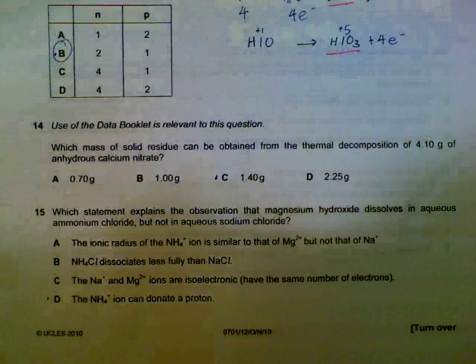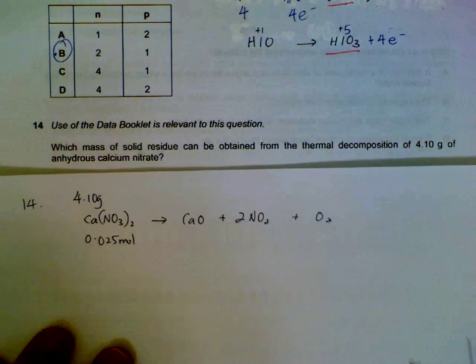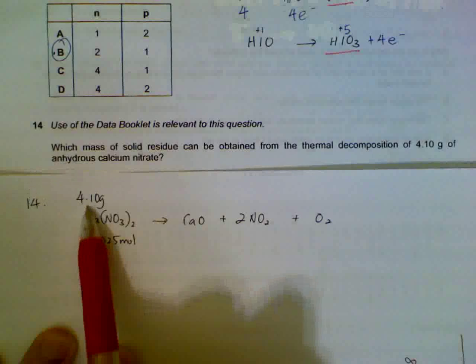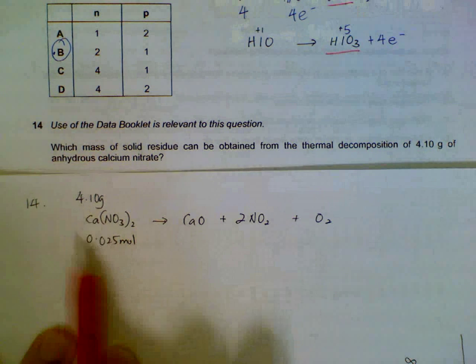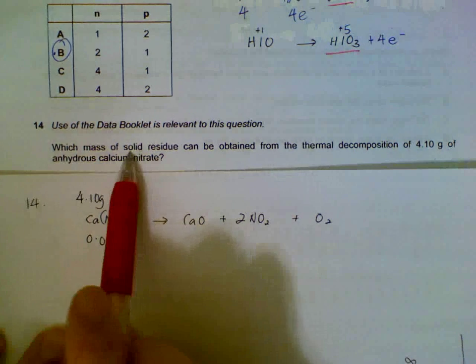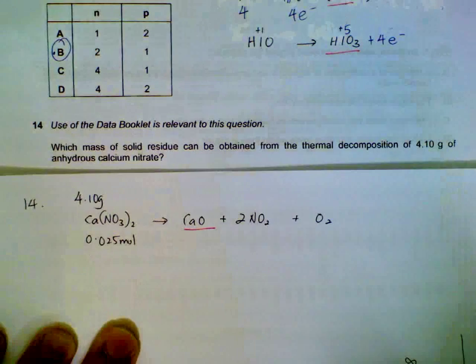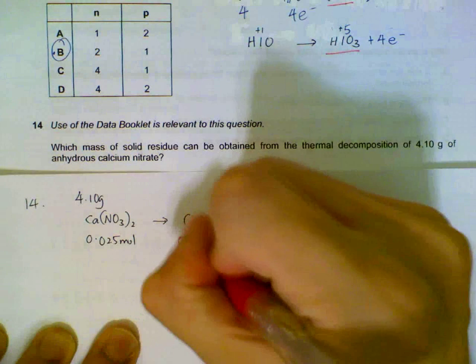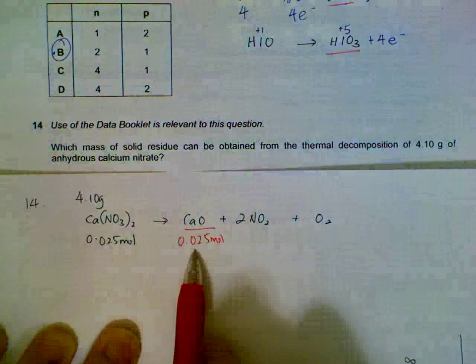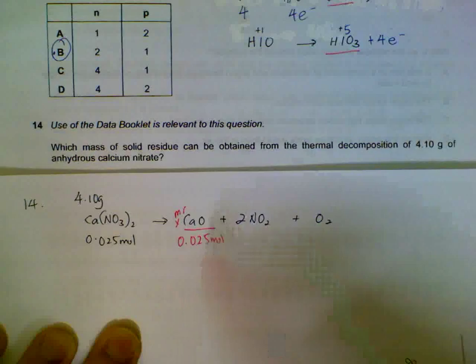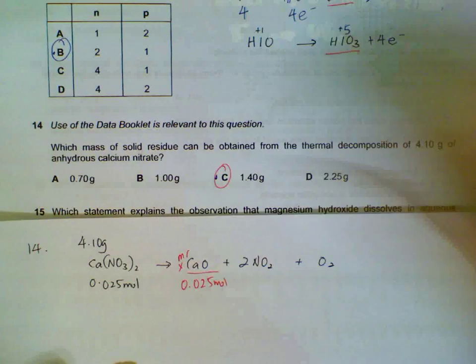14, decomposition of your group 2 nitrates. When group 2 nitrates decompose, they form the oxides, nitrogen dioxide and oxygen gas in this balanced equation. So we start off with 4.1 gram. The number of moles for calcium nitrate will be 0.025. The solid will only be referring to calcium oxide. Nitrogen dioxide and oxygen are obviously gases. So we just need to calculate that this is also 0.025. If we multiply by the MR of calcium oxide, we will get 1.4 grams of solid remaining.